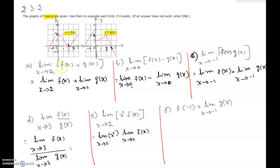Part a: limit as x approaching 2 of f(x) plus g(x). Part b: limit as x approaching 0 of f(x) minus g(x). Part c: limit as x approaching negative 1 of f(x) times g(x). Part d: limit as x approaching 3 of f(x) over g(x). Part e: limit as x approaching 2 of x squared times f(x). Part f: f(negative 1) plus limit as x approaching negative 1 of g(x).